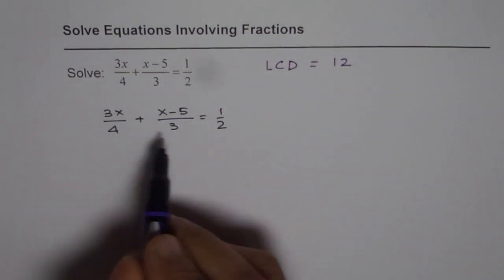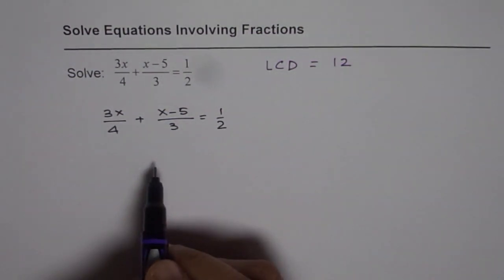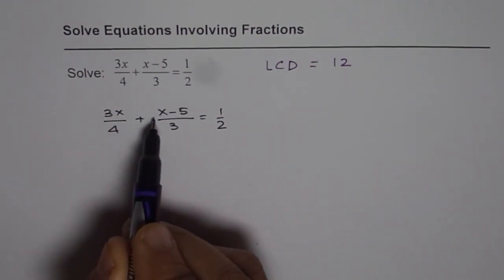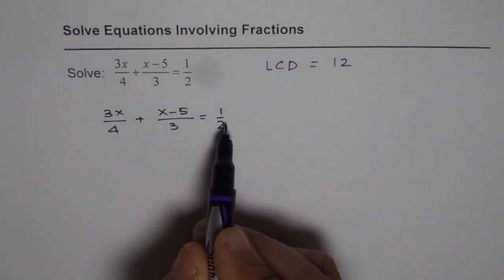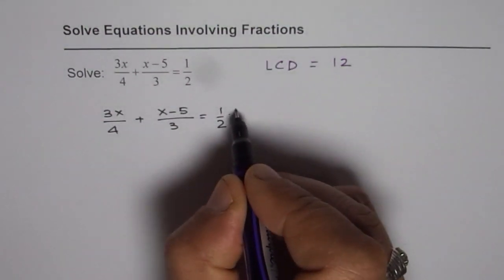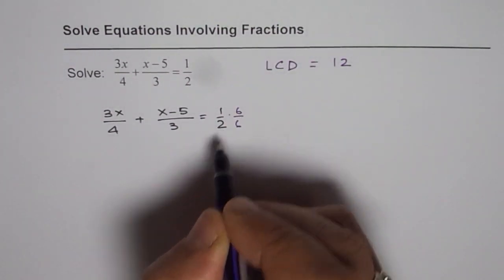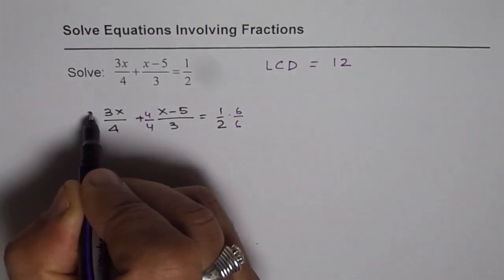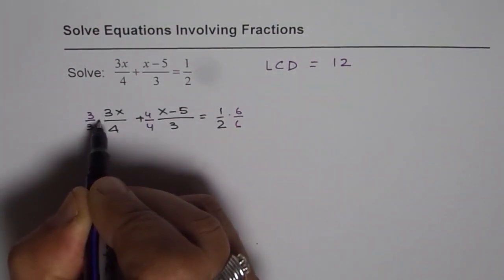Now to make each denominator as 12, what should you do? For the first one you need to multiply that by 3. For the second one you need to multiply that by 4. And for the last one you need to multiply that by 6. So we are doing 6 by 6 for the last one, multiplying by 4 for this one, and multiplying by 3 by 3 for this one.